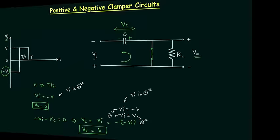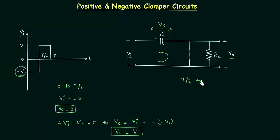Now I will analyze this circuit for the next half cycle, from T/2 to T. The polarity will change — we now have plus-plus-minus as the polarity, and the direction of current will be clockwise. The diode will be reverse biased, and I will replace it with an open circuit. I will use Kirchhoff's voltage law to obtain the output voltage Vo, because it is not zero in this case. Current will flow through the load resistance, not through the open circuit path since open circuit has resistance equal to infinity. So Vo equals Vi plus Vc.